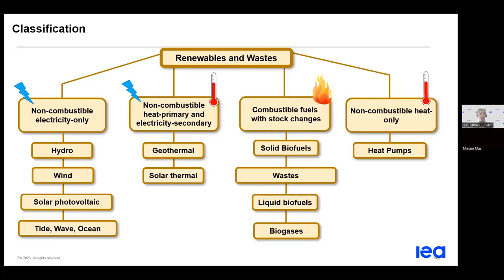Already in the second part of the presentation, you can see here the classification of renewables and waste. It is classified into four different groups, and this classification is based on the form of primary energy considered from a statistical point of view and how this form can be converted into one another. I will explain this starting from the first group, which is electricity only.